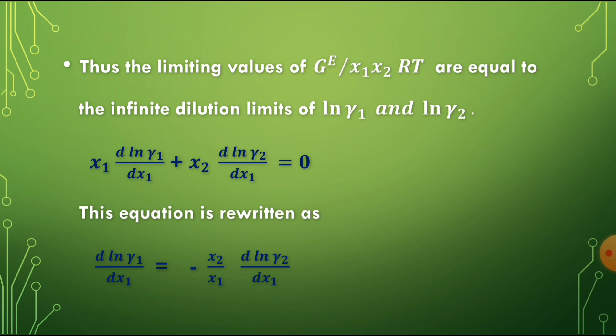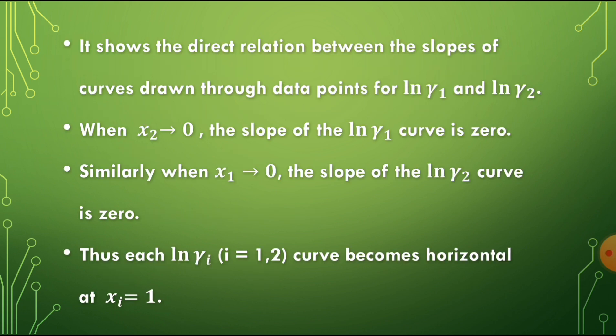The limiting values of G_E by x1 x2 RT are equal to the infinite dilution limits of ln gamma1 and ln gamma2. Again consider the equation x1 d(ln gamma1)/dx1 plus x2 d(ln gamma2)/dx1 equals 0. Rearranging: d(ln gamma1)/dx1 equals minus (x2/x1) times d(ln gamma2)/dx1. This shows the direct relation between the slopes of curves drawn through the data points for both ln gamma1 and ln gamma2.